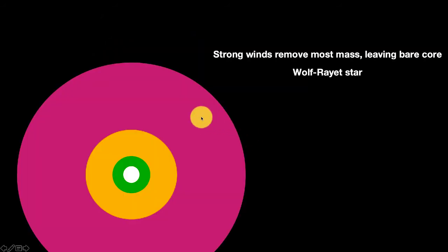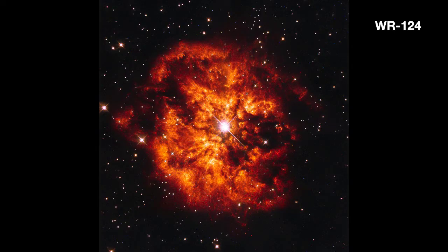What you tend to get left with is all this envelope at the outside has been blown away and you're just left with the core, the burning core in the middle. And these are what are called Wolf Rayet stars. And here's a pretty example of one of these things. So that's the Wolf Rayet star. The star has blown away all its outer envelope and you're now seeing the naked core surrounded by the huge amount of mass that's been blown out.